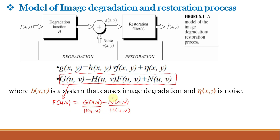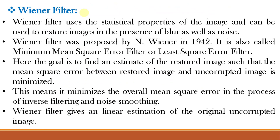But if noise is also added to the image along with blur, inverse filtering will not work. This is because H(u,v) may be very small, causing the noise term to tend to infinity and the estimated image to be largely degraded by noise. In that case we cannot use the inverse filter — we have to go for the Wiener filter. The Wiener filter uses the statistical properties of the image and can be used to restore images in the presence of both blur and noise.